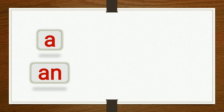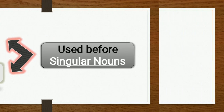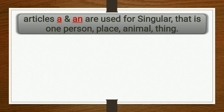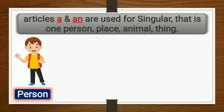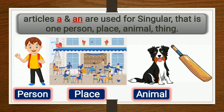Article A is pronounced as 'a' and article AN is pronounced as 'an'. Article A and AN are used before singular nouns. In the previous video, you learned about singular and plural. Articles A and AN are used for singular. Children, singular means only one — that is one person, one place, one animal, or one thing. So, articles A and AN are used for singular things.